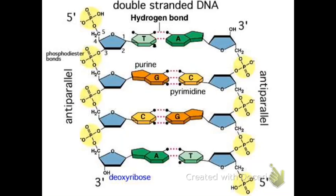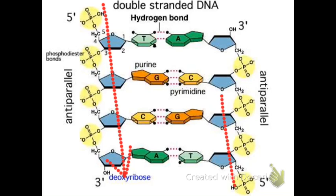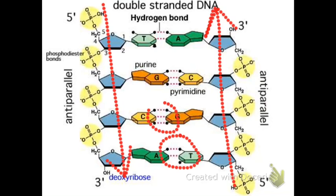This picture shows the anti-parallel structure we talked about earlier. This side compared to this side are upside down to each other. Notice the bases in the center — double bonds, triple bonds — and one purine bonds with one pyrimidine in the center. These are hydrogen bonds that hold the two sides of the DNA molecule together.